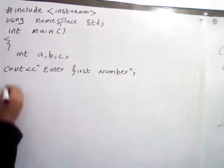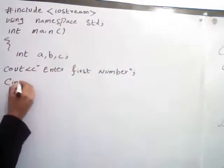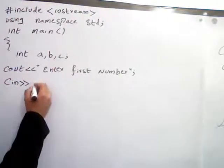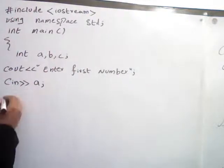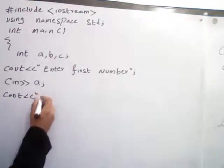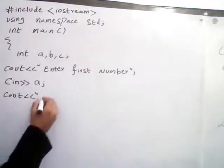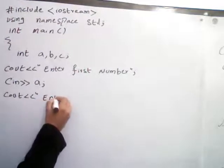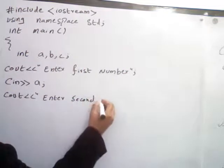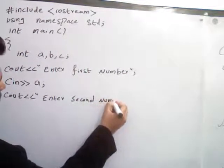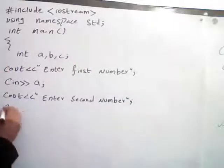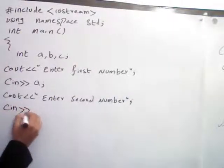And cin b to get the second input from users. So how can we add two numbers a and b? c equals a plus b. And print out the message: cout 'Sum of a plus b equals' to c.